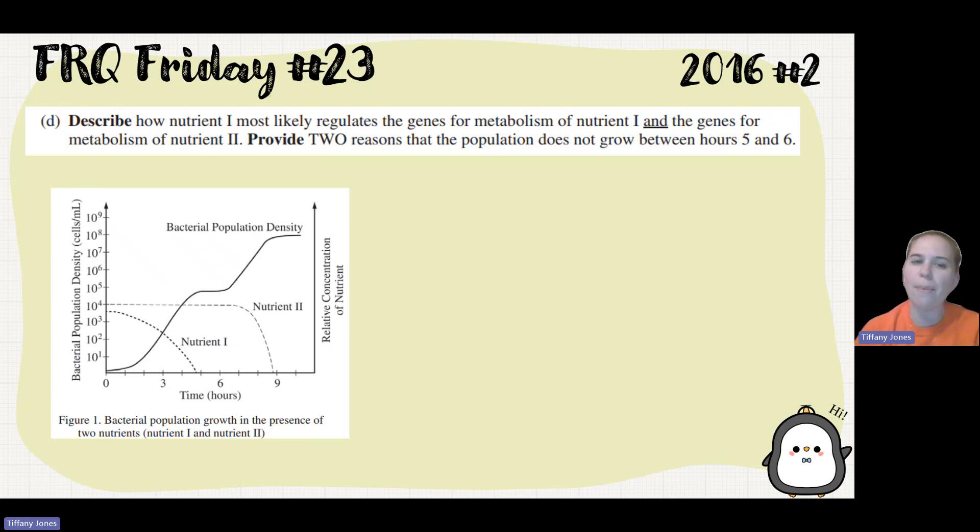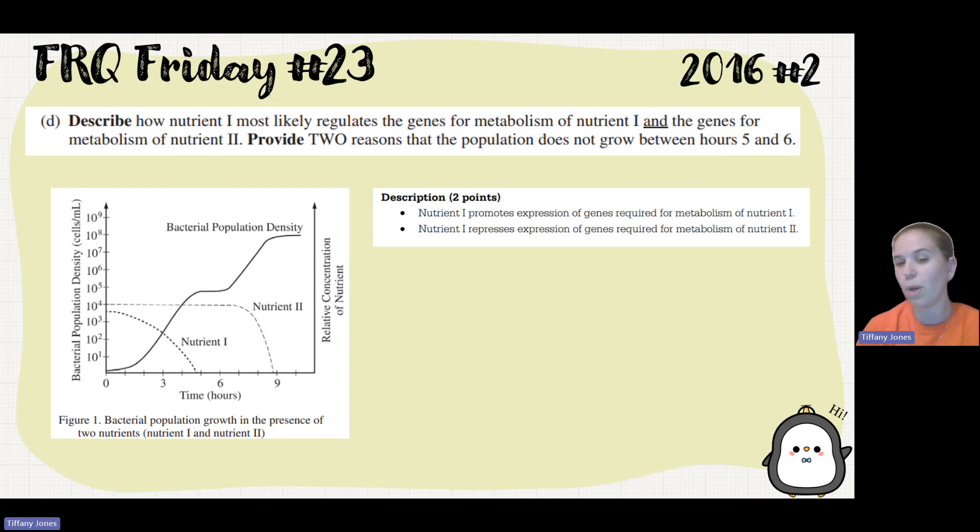Part D, we have to describe how nutrient one most likely regulates the genes for metabolism of nutrient one and the genes for metabolism of nutrient two. We know that nutrient one is being used first and nutrient two does not even get touched. So that means nutrient one must be activating the genes. It must be inducing transcription and translation so that we can make the proteins to break down nutrient one. At the same time, it's going to somehow inhibit the genes for nutrient two, inhibit transcription and translation. So it promotes expression of genes required for metabolism of nutrient one and represses expression of genes required for metabolism of nutrient two.